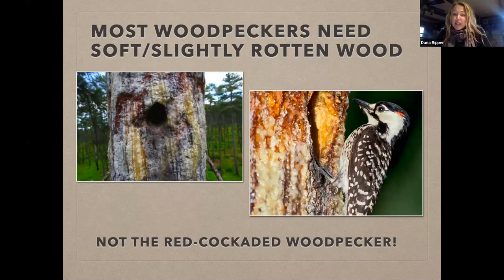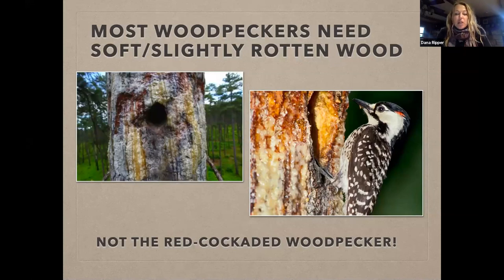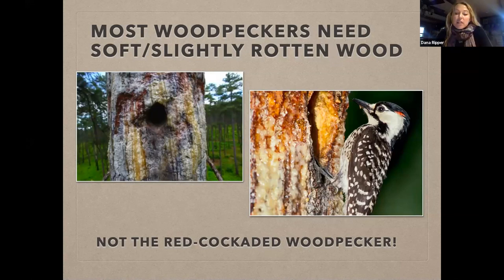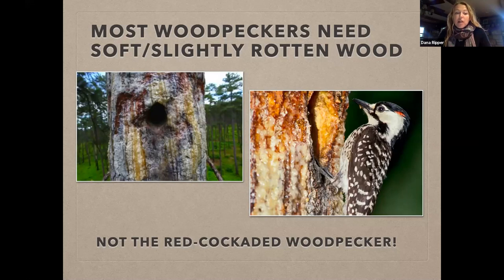The red-cockaded woodpecker takes much longer to excavate its cavity in living wood, but the resulting cavity has sap flow around it, which is a great predator deterrent. This species is no longer in Missouri, though it did occur in our Ozark forests. One reason it declined and became endangered is the availability of nesting sites — if you cut down a tree it was excavating in, this species can take months to build another one. But once they do, it's a very very safe house.